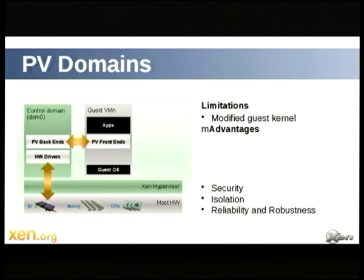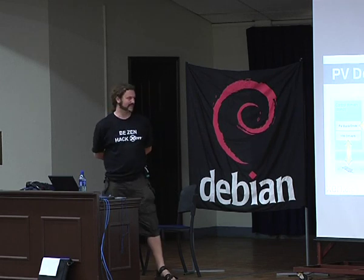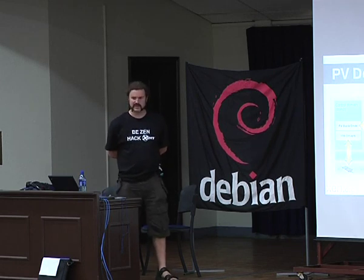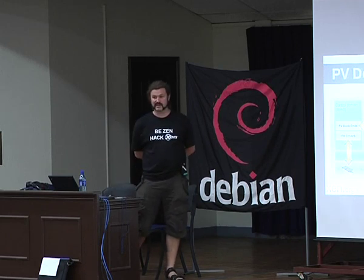There are basically two forms of guest domain. The first, and most long-standing, is a para-virtualized domain or PV domain. These have been around since the very early days. The key thing about a para-virtualized domain is that the guest knows it's running virtualized and, rather than doing things directly with the hardware, it makes hypercalls to the hypervisor and does things in a virtualization-friendly way, which means they can be pretty fast.